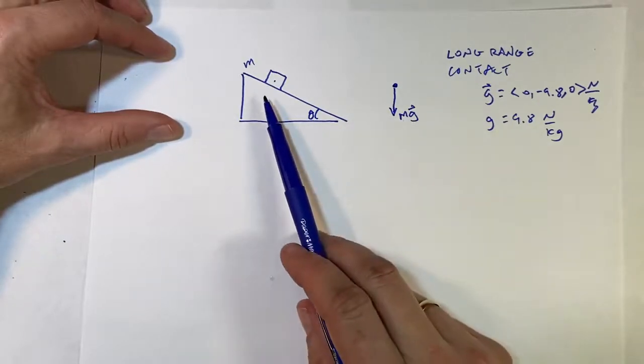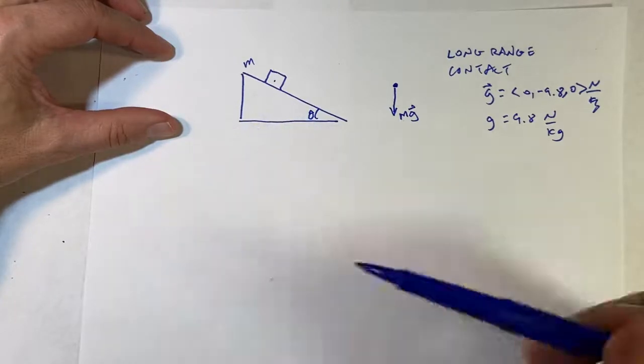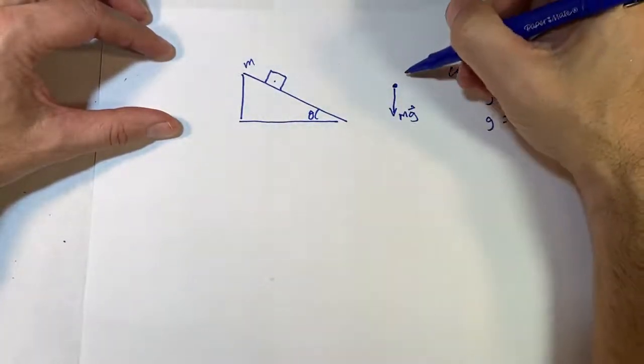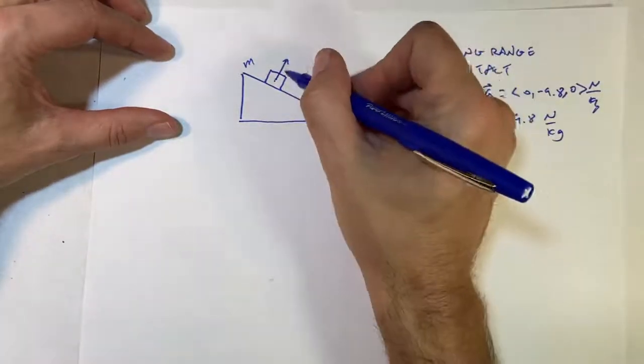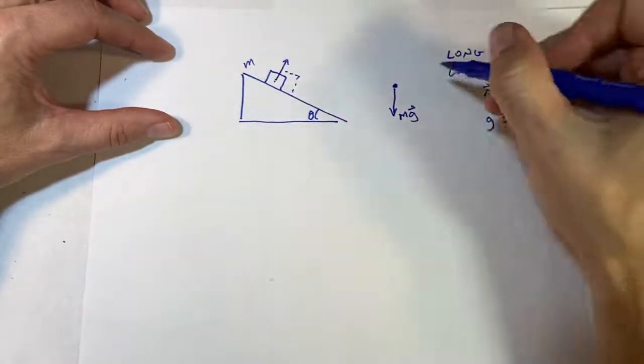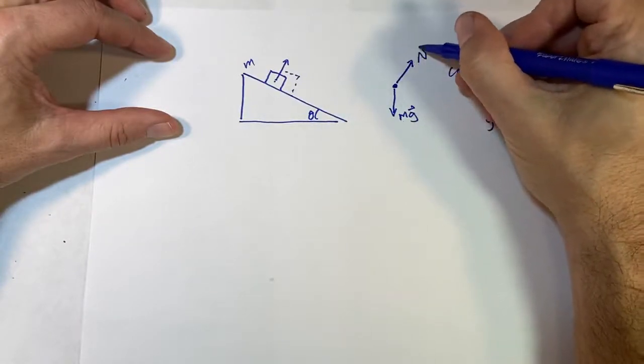Now the other force acting on this is a contact force. In the case of a plane, we have something that's called a normal force. So this normal force is going to, I'll draw it right here first, is like that. It's perpendicular to the surface.